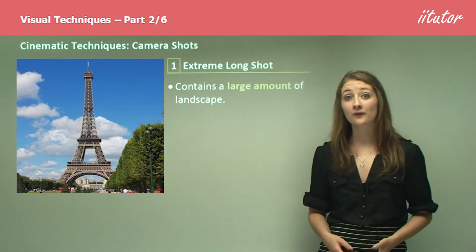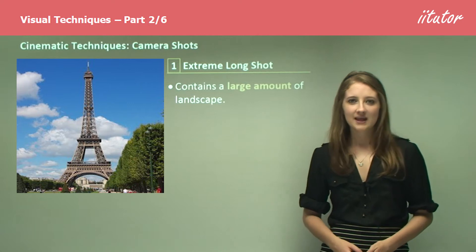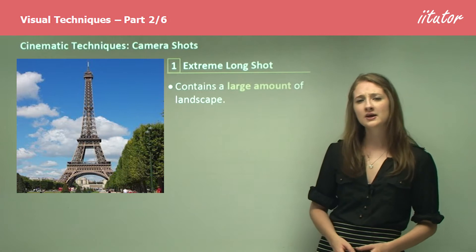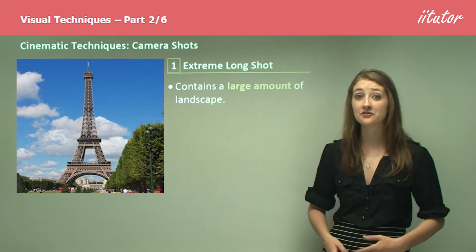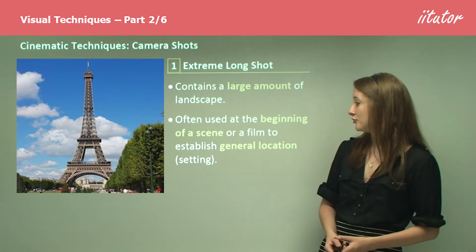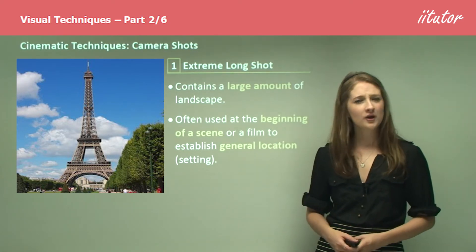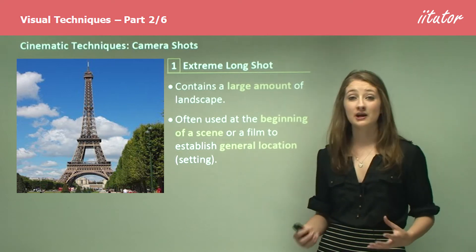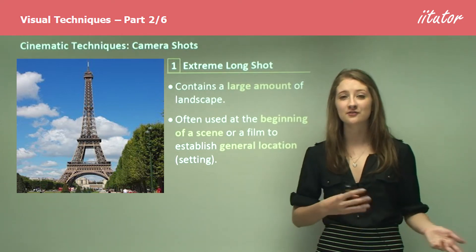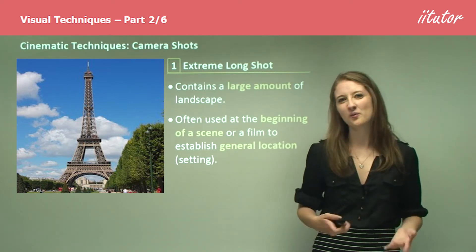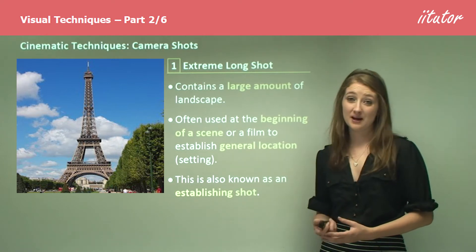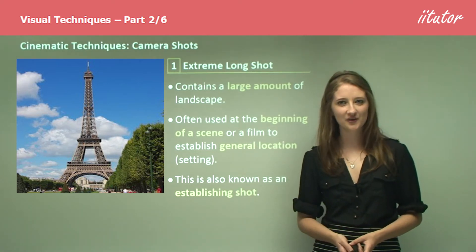The first of these is called the extreme long shot. The extreme long shot contains a large amount of landscape — it's really when you're getting the full picture, such as seeing the entire Eiffel Tower at once. It's often used at the beginning of a scene or film to establish a large, general location. This is basically the setting shot, where you get your first insight into where the movie is set and what it might be about. It's also known as an establishing shot.